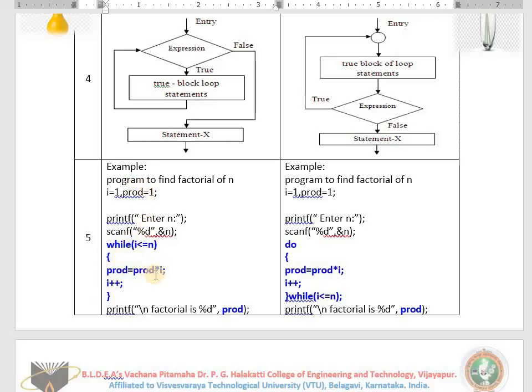2 into 3 is 6. 6 times 4 is 24. 24 times 5 is 120. Factorial is 120. Same thing. Again, i equals 1, prod equals 1. We read n. Prod 1 into 1, i becomes 2. 2 less than equals to n. 120. Very simple. Interesting.